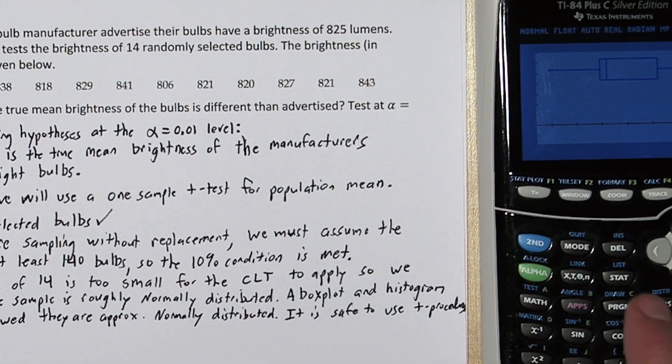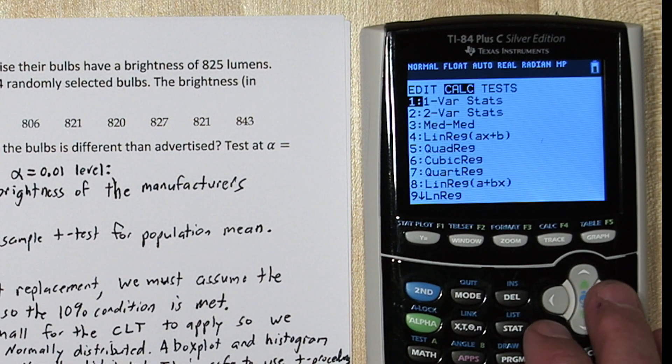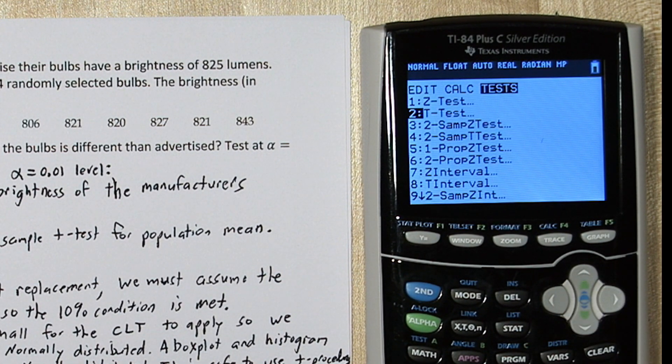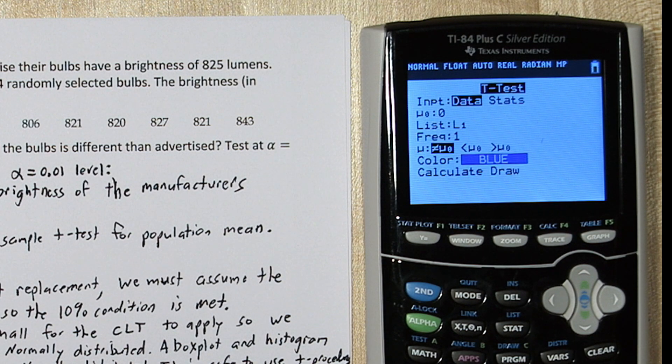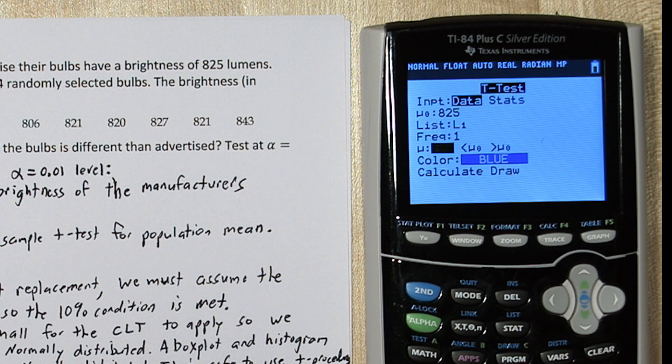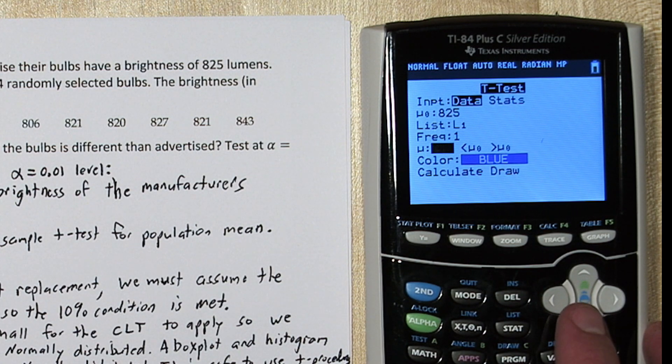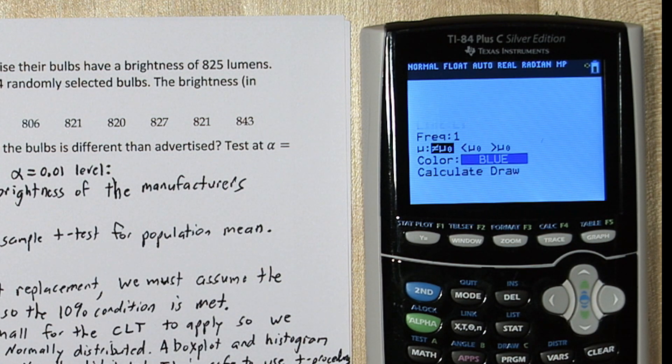Now we're ready for the do step. If you press STAT and you go over to test, click T TEST. Now it says, do we have the data or the summary statistics? In this case, we have the data. So it says, what's your mean of interest? Ours is 825. We want to use the data in list one, and we're going to use each data value once. And we're interested in, is there evidence it's any value other than 825? So we'll leave that as not equal to. When we push calculate,